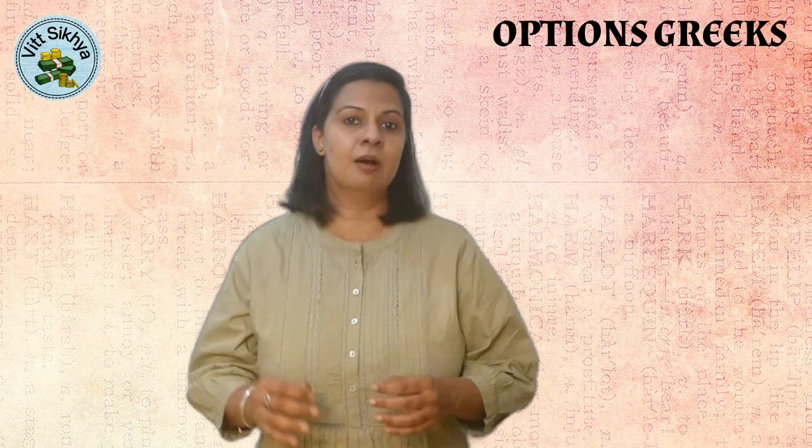Overall, the Greeks for this long put option indicate that the option is slightly bearish on the underlying stock price and is sensitive to changes in volatility. The option price is also likely to decrease over time and with rising interest rates. However, the positive gamma indicates the option price will become more sensitive to changes in stock price as it gets closer to the strike price. In other words, if you believe the stock price is likely to fall below Rs. 510 by October 26, 2023, this long put option could be a profitable trade.